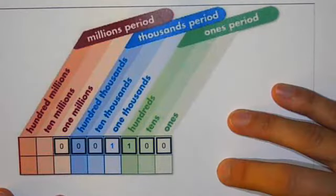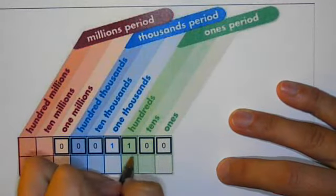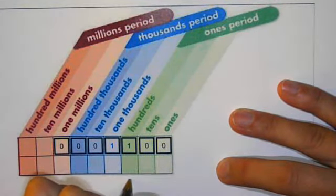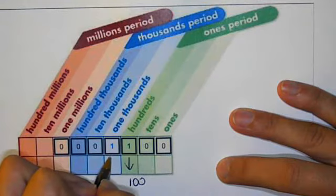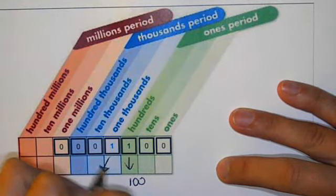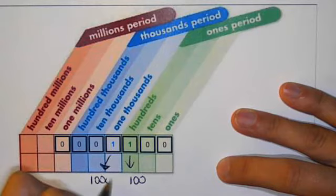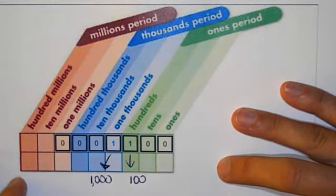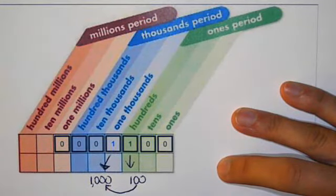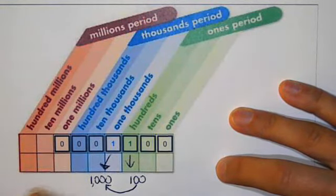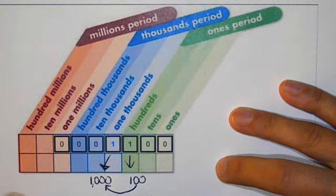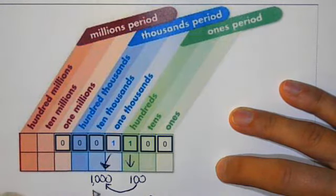Another example could be this 1100. So I have a one in the hundreds place, so that would be 100. And then I have a one in the thousands place, which would be 1000. How do you get from 100 to 1000? Remember, you are going to be multiplying. So I will multiply 10 times 100, and when I do 10 times 100, I get my answer of 1000.